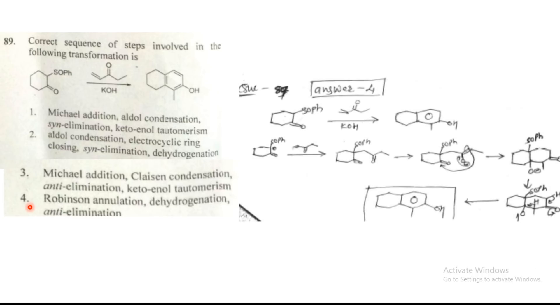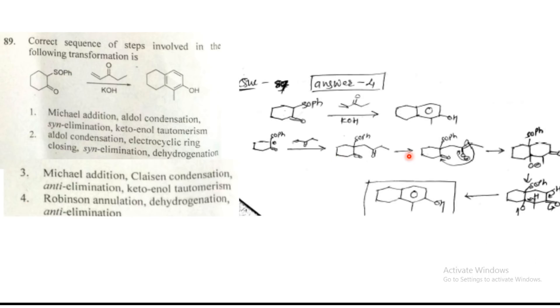But in your first answer also, they have given Michael addition, aldol condensation. But Michael addition, aldol condensation is known as Robinson annulation, and then dehydrogenation and then anti-elimination. This fourth should be the answer, right? You can see here how the mechanism goes through.